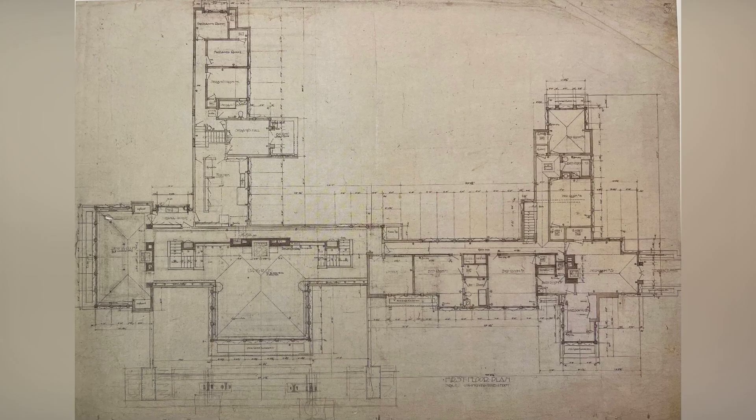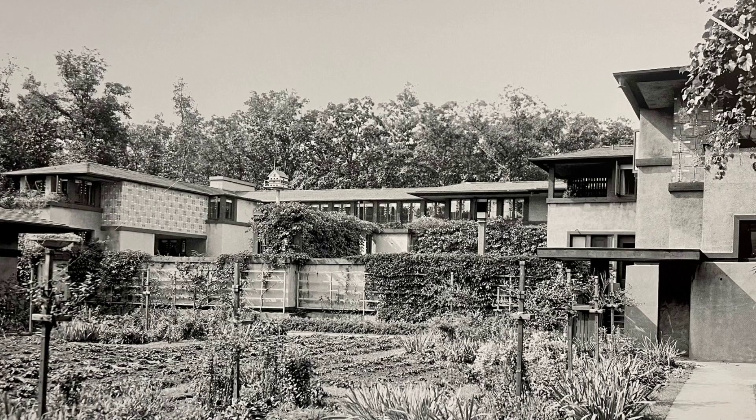The floor plan of the Avery Coonley House is a testament to Frank Lloyd Wright's commitment to creating spaces that are functional, beautiful, and in harmony with the surrounding environment. The horizontal lines, overhanging hipped roof, and Wright's signature art glass windows with geometric designs are defining aesthetic features. The exterior patterns are a precursor to his later textile block houses.